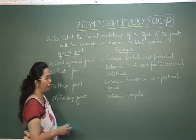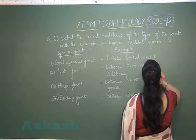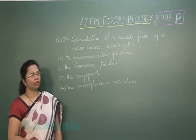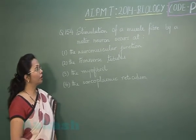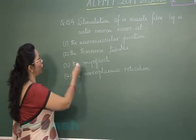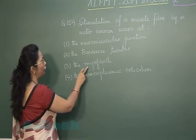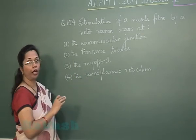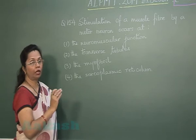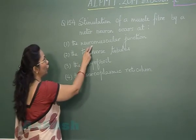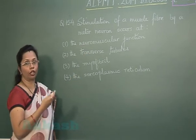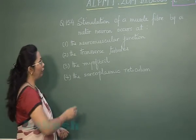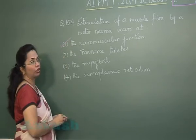Question 154: Stimulation of a muscle fiber by a motor neuron occurs at — options include the neuromuscular junction, transverse tubules, myofibrils, or sarcoplasmic reticulum. The muscle fiber and neuron have a junction at the myoneural junction. It is at this location that the neuron releases acetylcholine, which binds to receptors present in the sarcolemma. So the best choice is the neuromuscular junction.